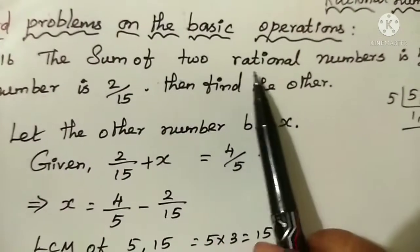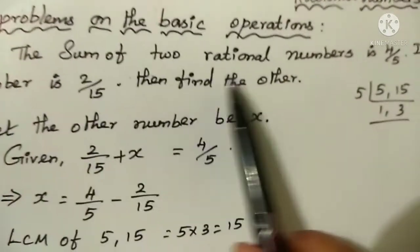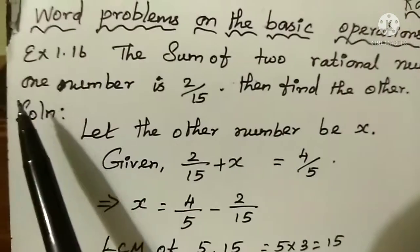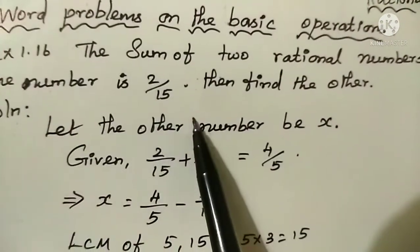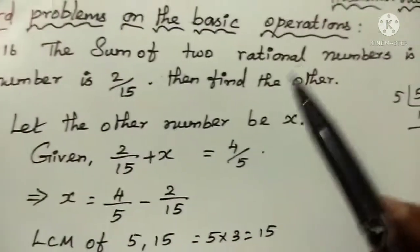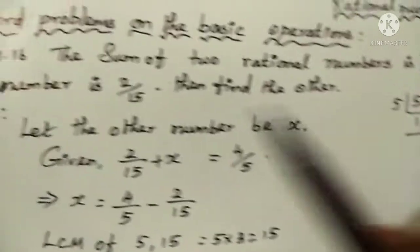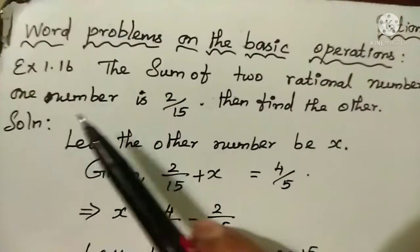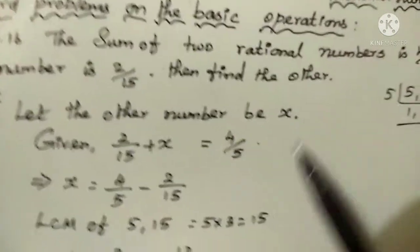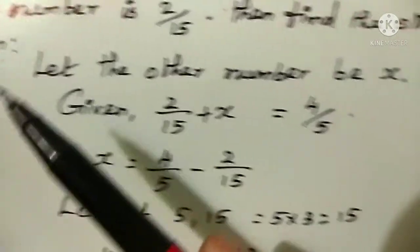The sum of two rational numbers is 4 by 5. If one number is 2 by 15, then find the other. Solution.